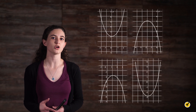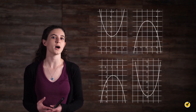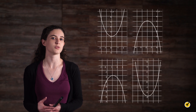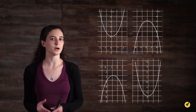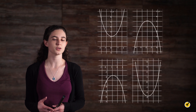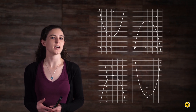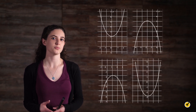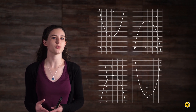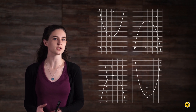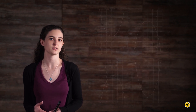If a quadratic function opens up, then the range is all real numbers greater than or equal to the y-coordinate of the vertex. If a quadratic function opens down, then the range is all real numbers less than or equal to the y-coordinate of the vertex. Graphs can be helpful, but we often need algebra to determine the range of quadratic functions. Sometimes we are only given an equation, and other times the graph is not precise enough to accurately read the range. So let's look at finding the domain and range algebraically.